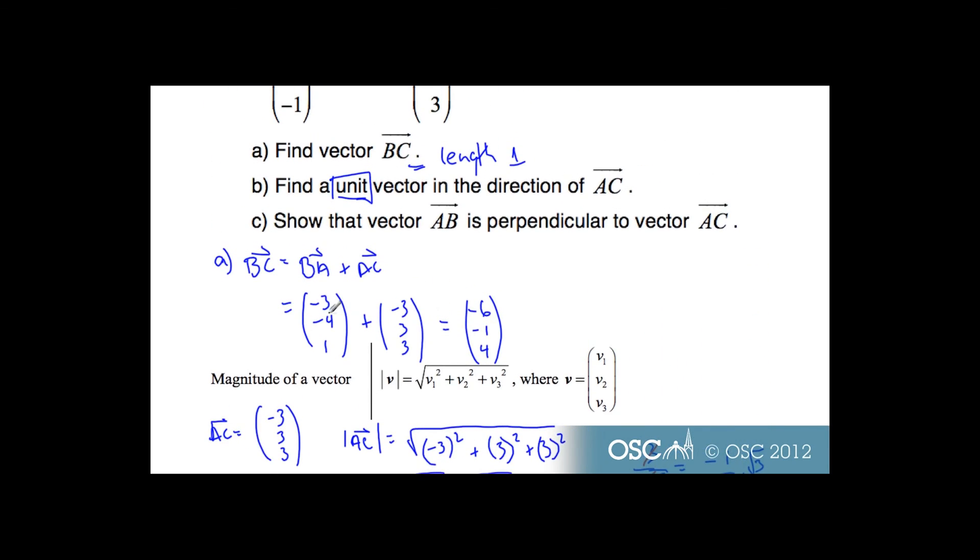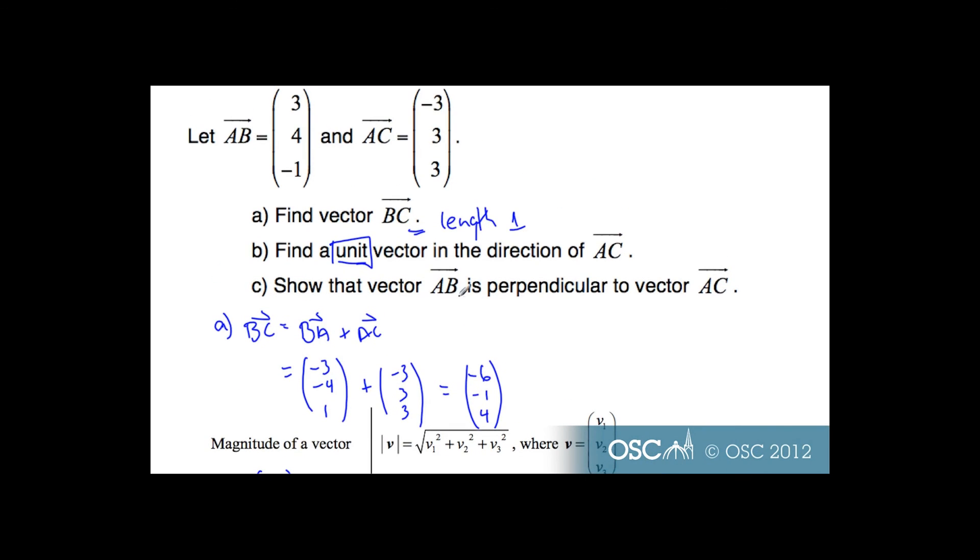And then A part, finding vector BC, we take our vector coordinates, using them to help us out. We go from B to A and then A to C, add them up with the change of sign, and we get this vector here.